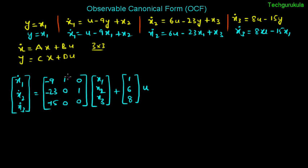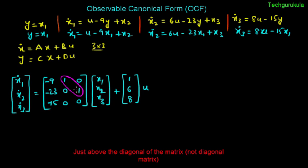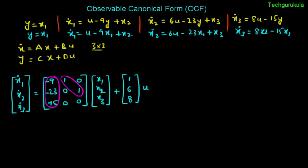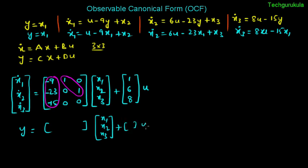Now writing the output equation: y equals C times the state vector [x1, x2, x3] plus D times u. Since y simply equals x1, the C matrix is [1, 0, 0] and D equals 0. So y is simply x1.